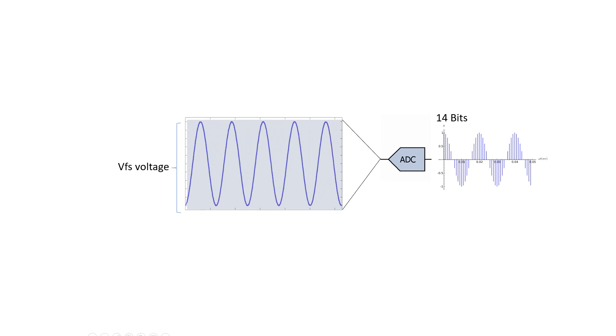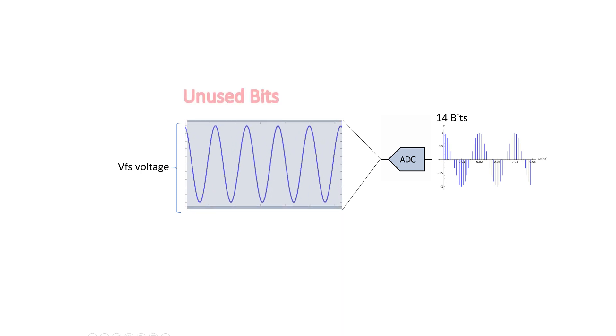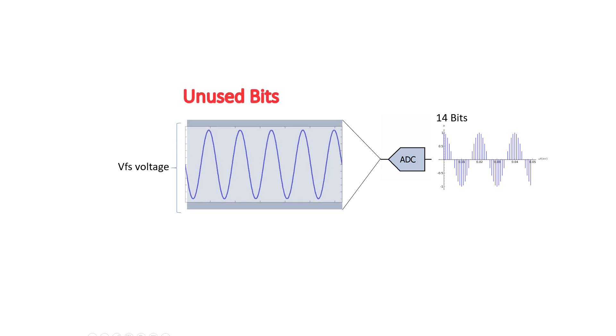If the input signal amplitude is less than V full scale voltage, the bits above the signal amplitude levels are not utilized. Hence we are not utilizing the full potential of the ADC.